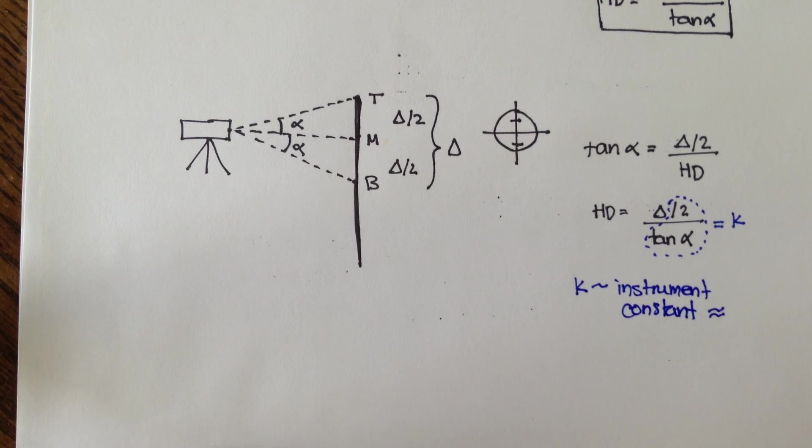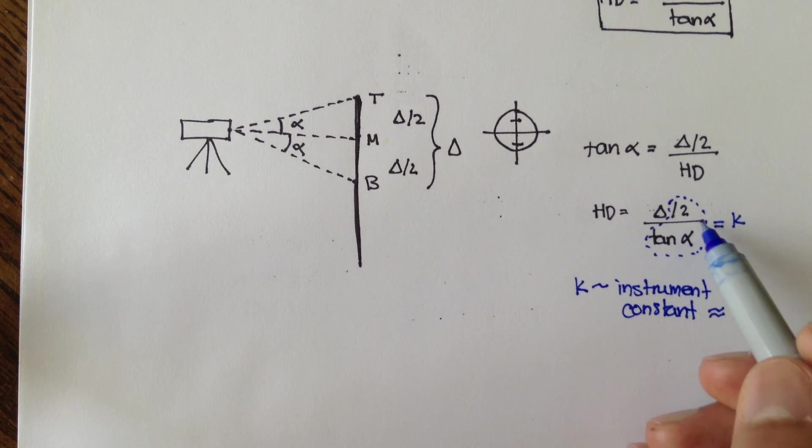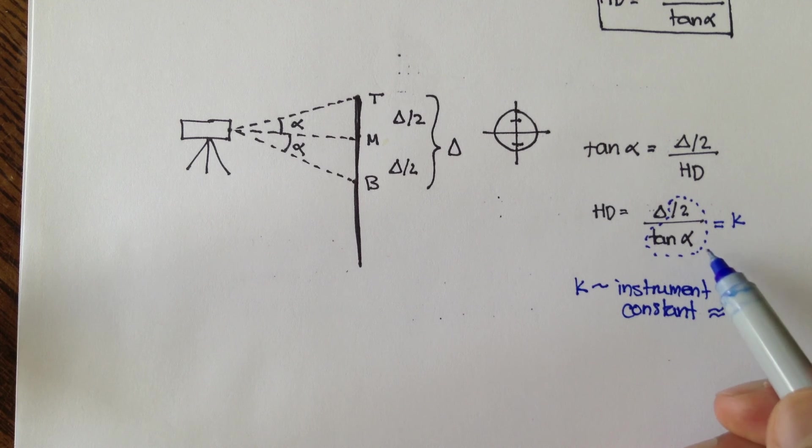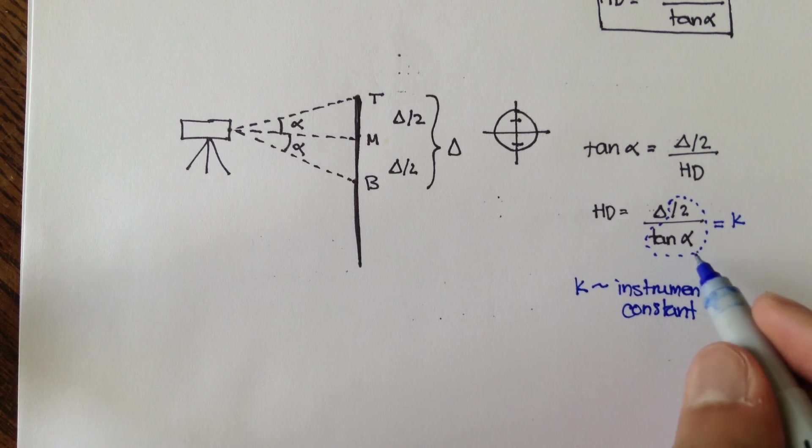And usually, this is kind of a rule of thumb, usually it's just 100. K is equal to 100, unless the instrument specifically tells you that K is some other number other than 100. So, for our examples, we'll always use 100. Now, if we said the divided by 2 tan alpha is a constant, we can say, or in that constant is equal to K...